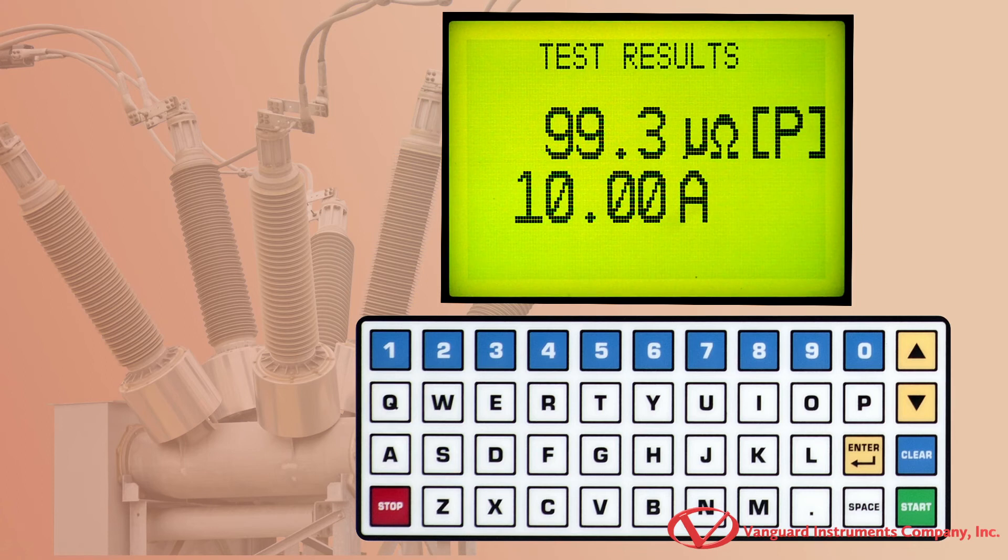Note that if the test results are within the pass-fail range, a P will be displayed. If they are outside the range, an F will be displayed to indicate that the test failed.